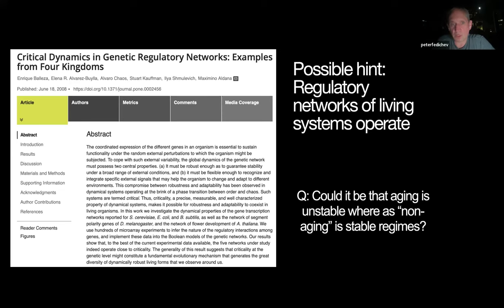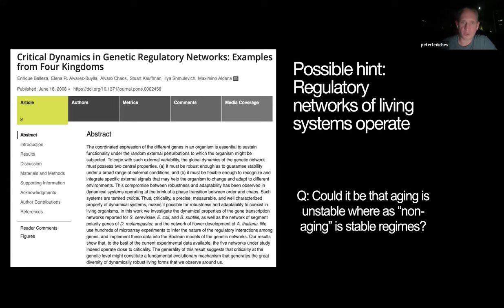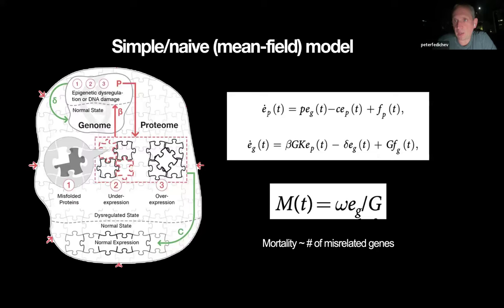To his surprise, Kauffman found that with experimental accuracy he couldn't determine whether those regulatory networks are stable or not. It looks like almost all living creatures operate at the boundary between stability and instability. When I learned about that and about naked mole rats, I started thinking that maybe those who are unstable — close to the boundary — are those who normally age, and those who are stable are those who do not age.